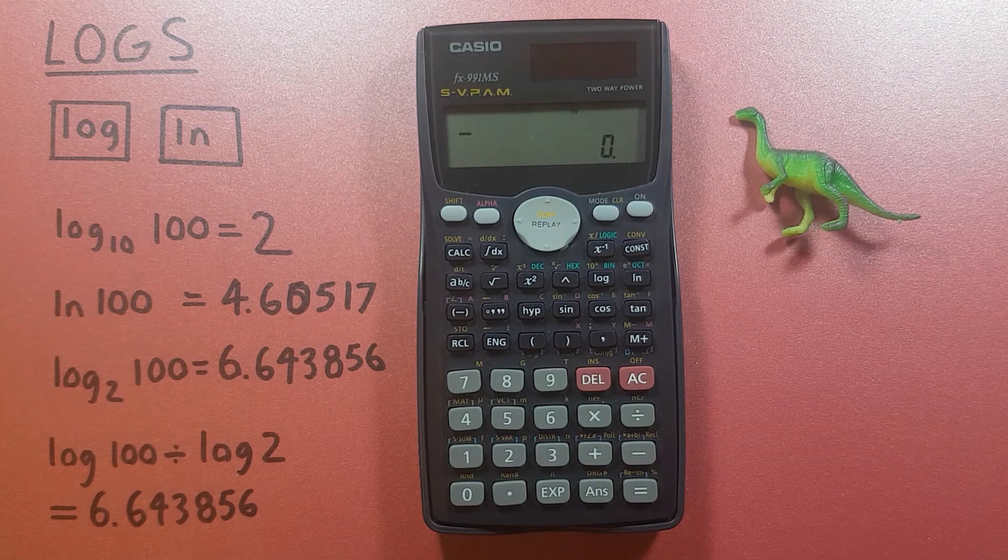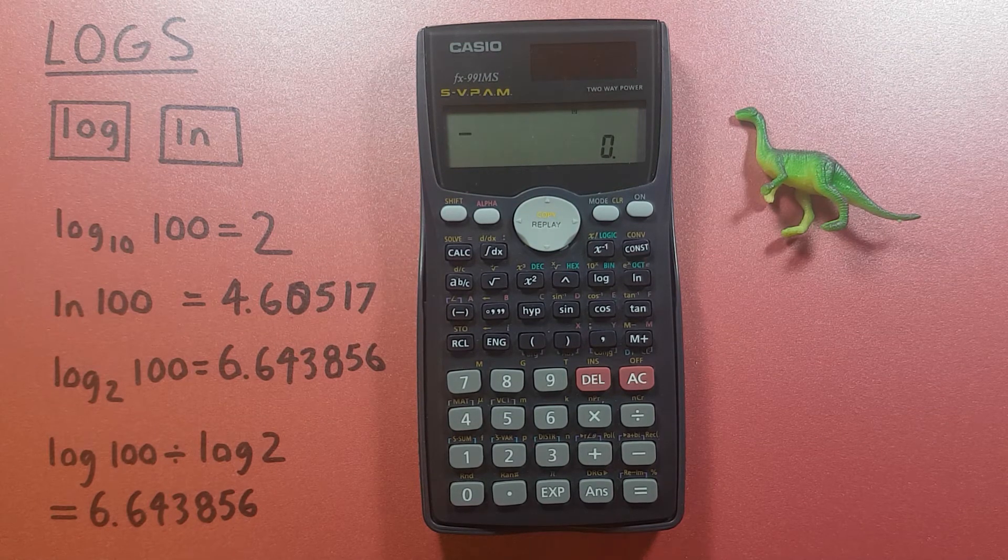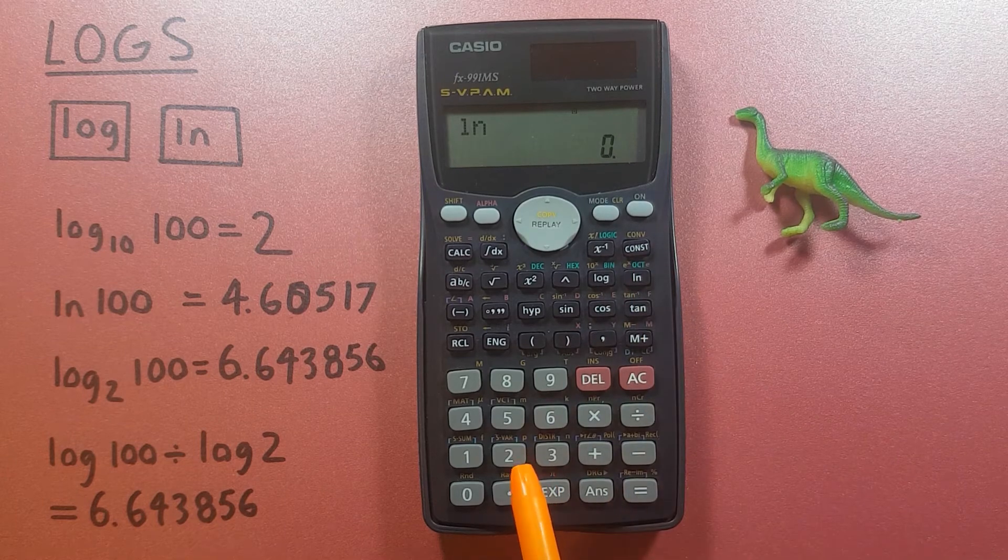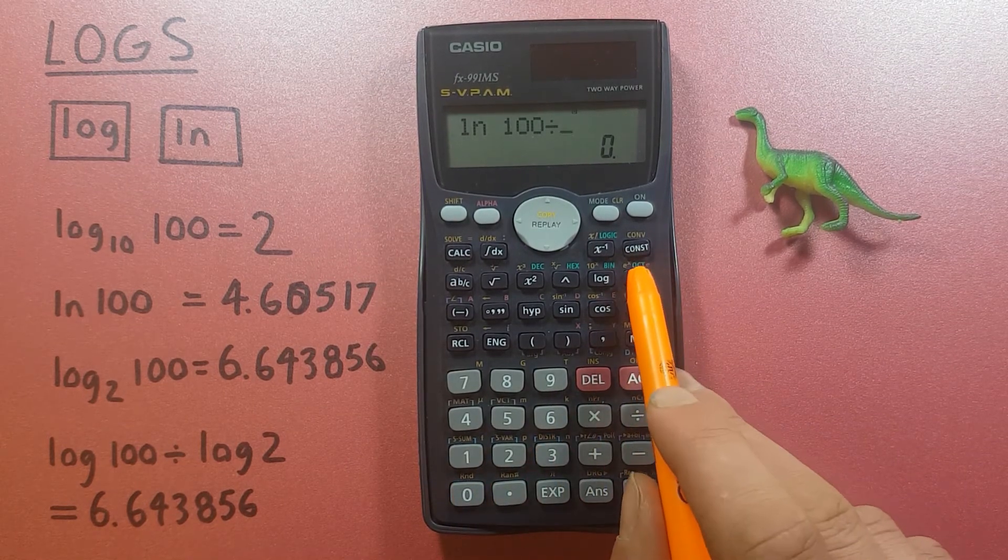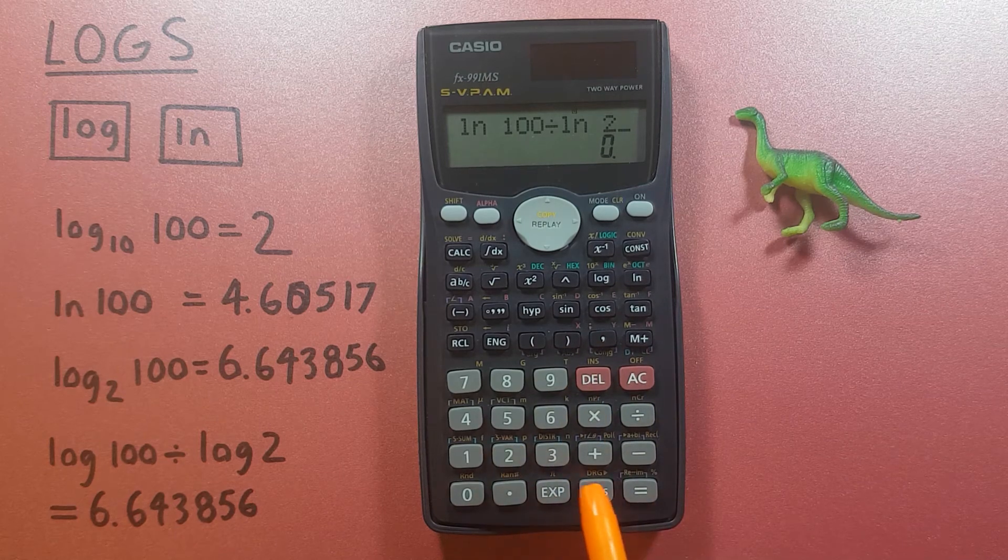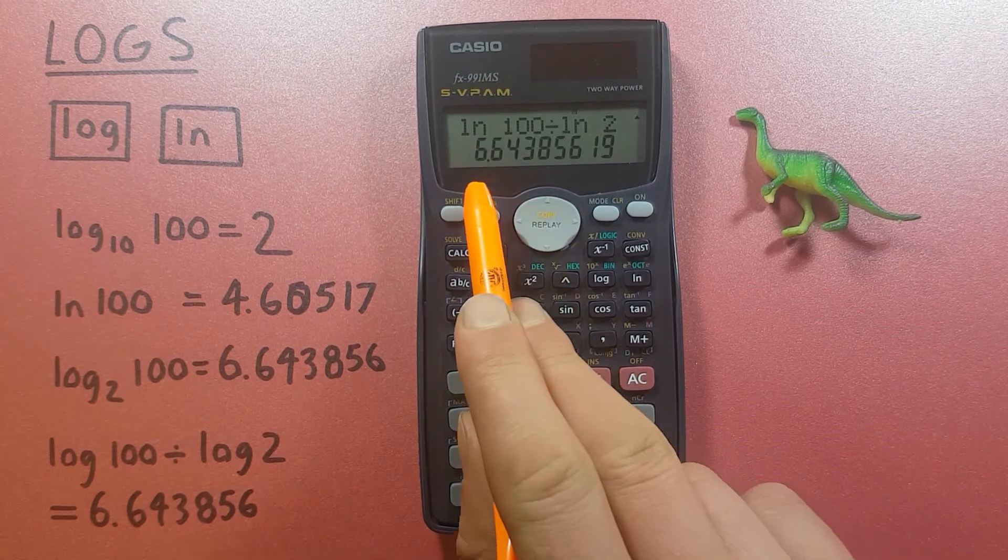Now since this is a ratio we can also use the natural log for this. So if we press LN 100 divided by LN 2 and press equals we get the same result.